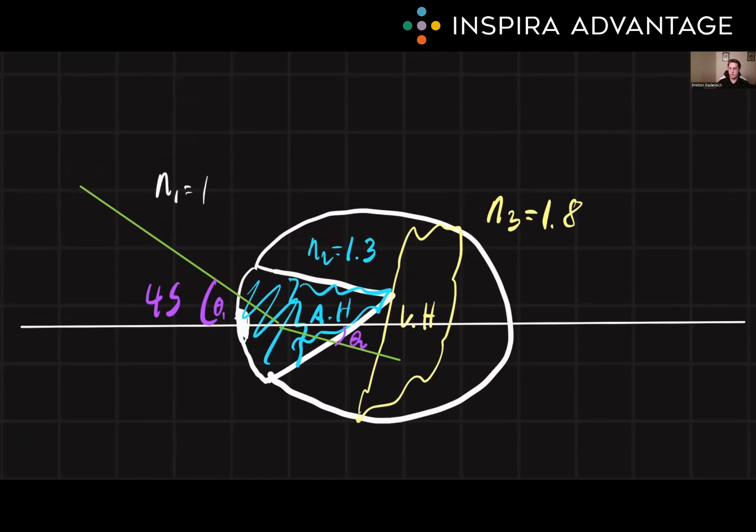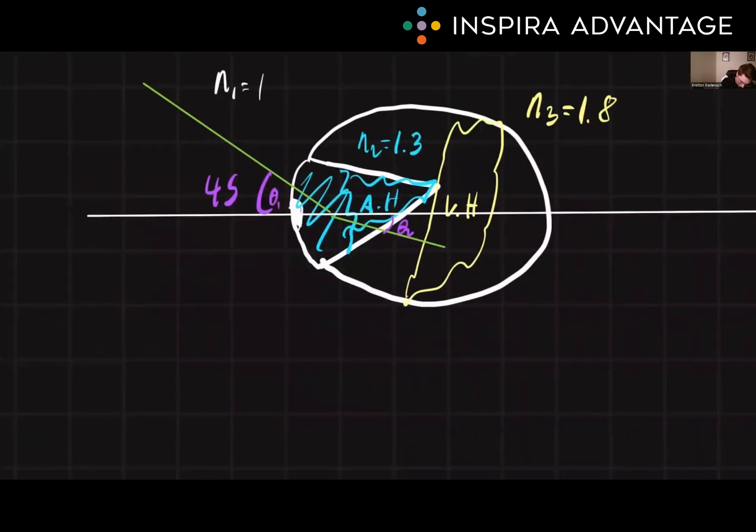Next, we know that the incidence of the light is coming in at 45 degrees, so we've got our angle as well. So all we have to solve for is our theta 2. So let's set up that equation. So we know that n1 times sine theta 1 equals n2 times sine theta 2.